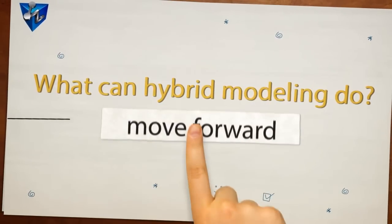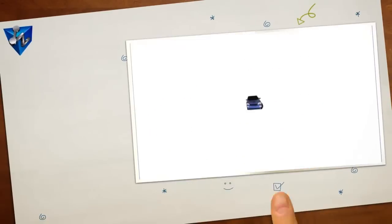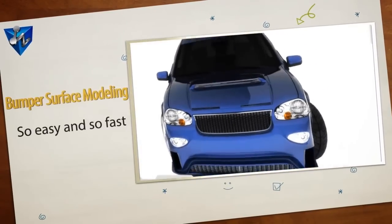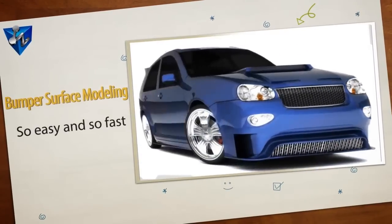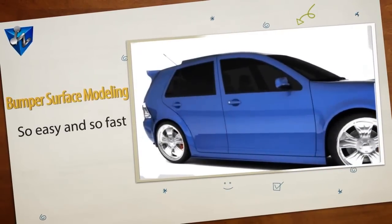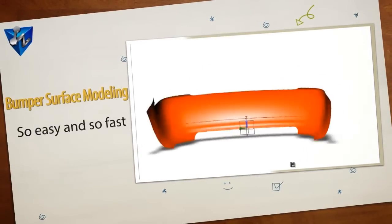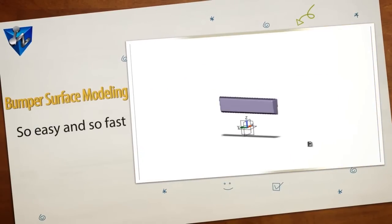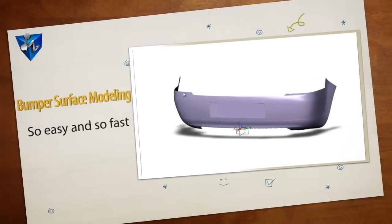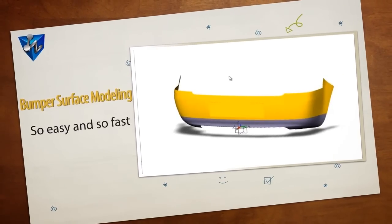So, what can hybrid modeling do? Bumper surface modeling: use a solid feature to cut your surface geometry and you get your surface. So easy and so fast.